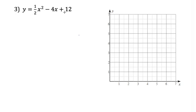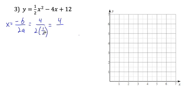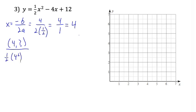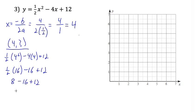Here's one last quadratic equation in standard form to graph. We'll start by using our formula to find the x-coordinate of the vertex: negative b over 2a. The opposite of negative 4 is positive 4. A is a fraction — 2 times 1 half, one way to think of that is finding half of 2, which is 1. So the x-coordinate of the vertex is 4. Let's substitute that 4 into the equation for both x's. 4 squared is 16, and 1 half of 16 equals 8. 8 minus 16 is negative 8, and negative 8 plus 12 equals 4. So the vertex is at 4, 4.